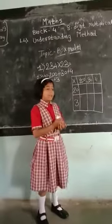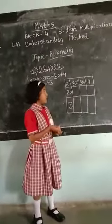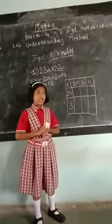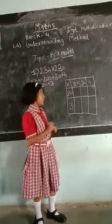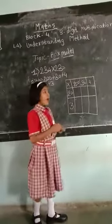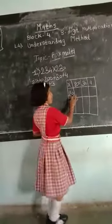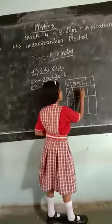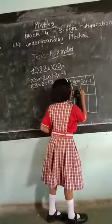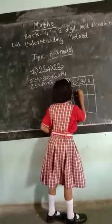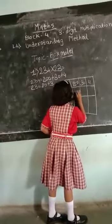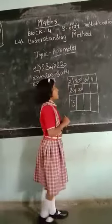Now in multiplication there is one step: write a zero to the right for each place. So I write 0, 1, 2, and 3. Here is a 3-digit number, so I write zeros accordingly for the 3-digit number.